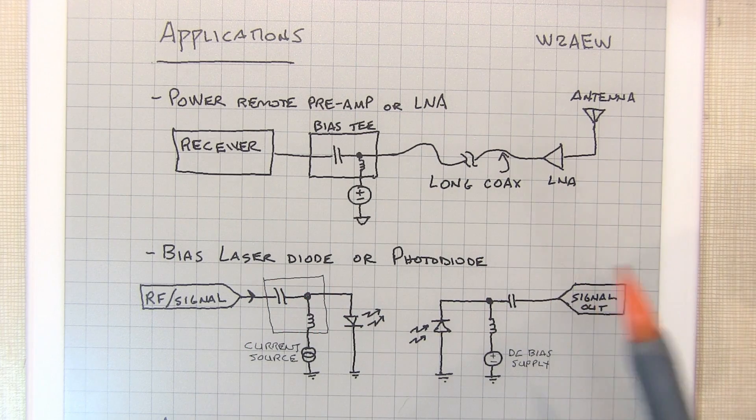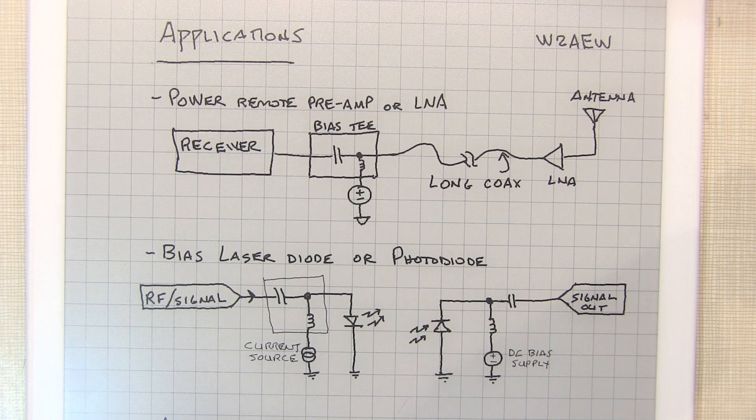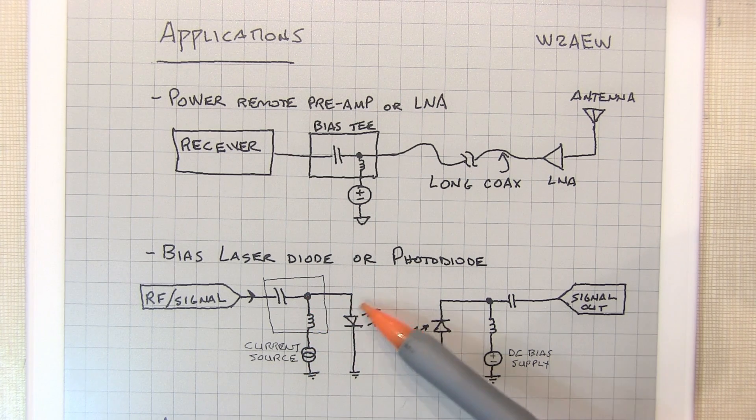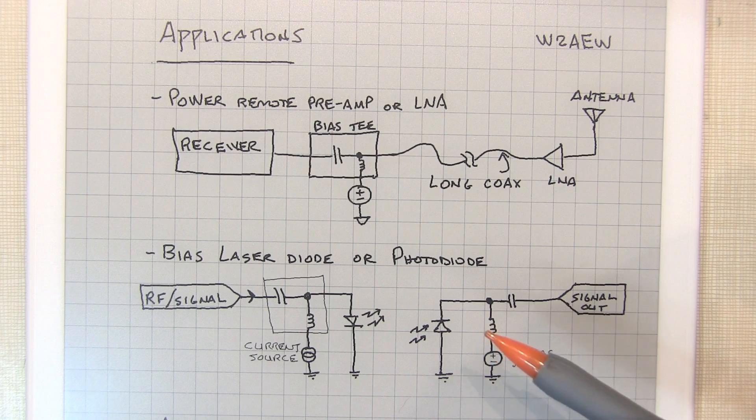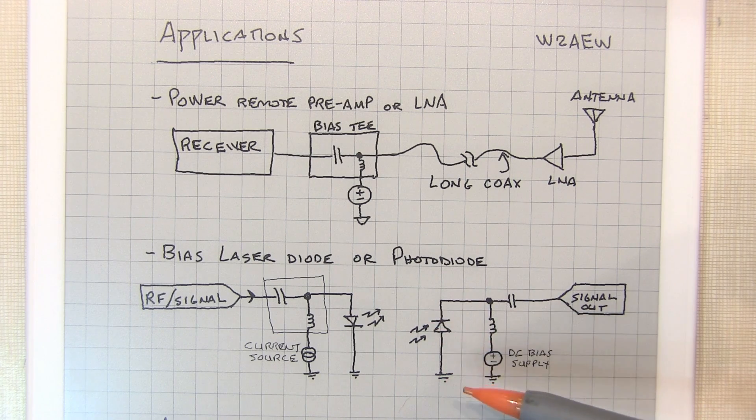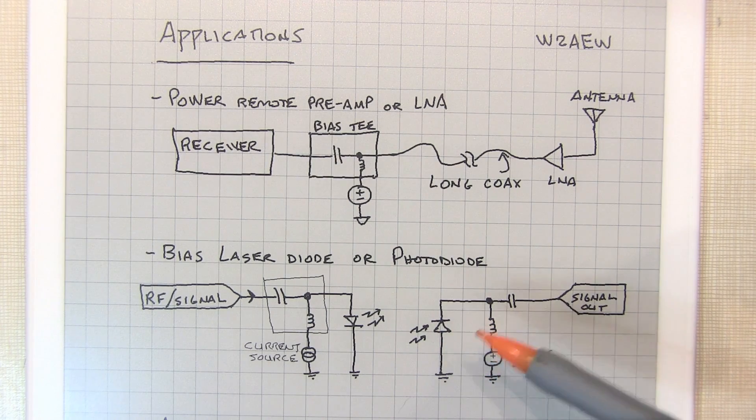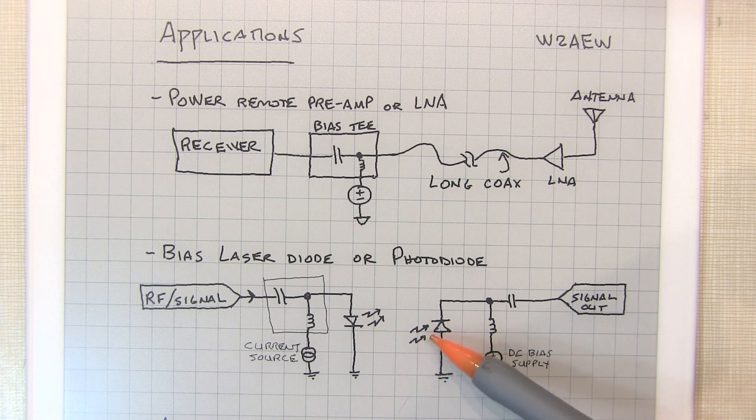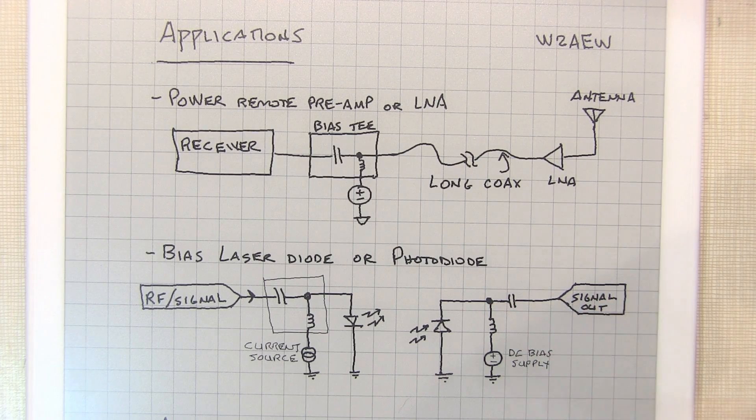Another application is RF applications or other applications like that for optoelectronic components like laser diodes or photodiodes. Again, to provide the bias to a laser, for example, to get it into its active region, you might bias it up through a current source through the DC path to get the laser ready to go and then couple your high-speed RF signal onto it. Photodiodes, for example, will operate at very high speeds when they're reverse biased to extend the depletion region, reducing its capacitance. So a DC bias is often applied to a PIN diode, like a photodiode, to increase its speed, and then the high-speed optical RF signal can be coupled into the detector and then coupled through the RF path into a preamp or something like that or some kind of a receiver.